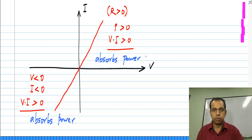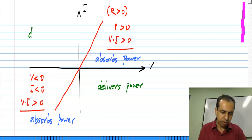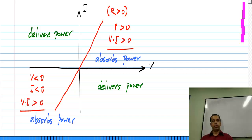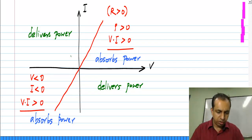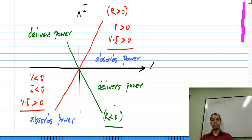When I say absorbs power, we are talking about the element whose V-I characteristics we are plotting. Conversely, if it happened to be in the second or fourth quadrant, it delivers power. So if you happen to have a negative resistor, it will deliver power because the slope would be negative. But of course such a resistor cannot be physically realized — you can realize them using active circuits, and that part is outside the scope of this course.